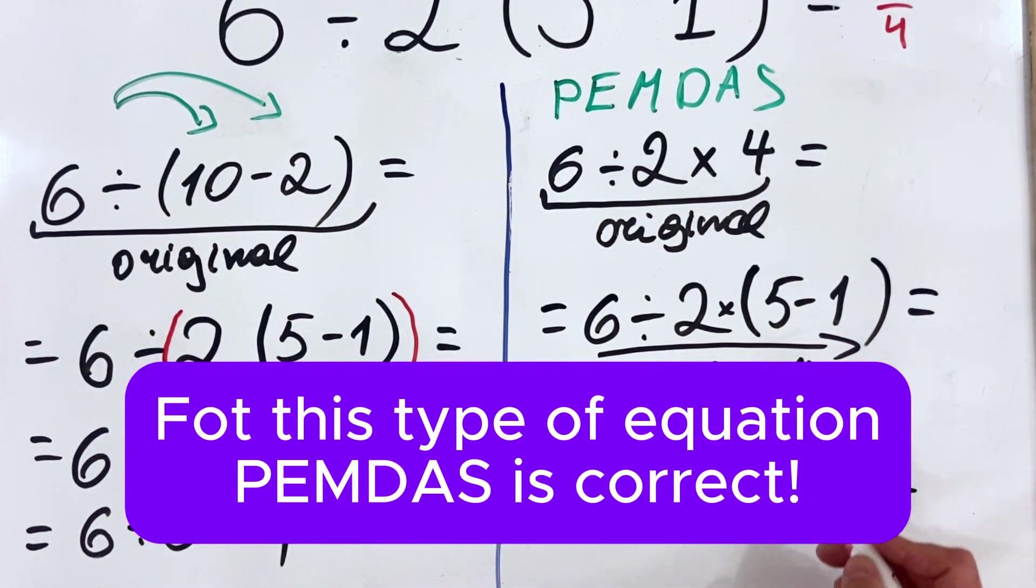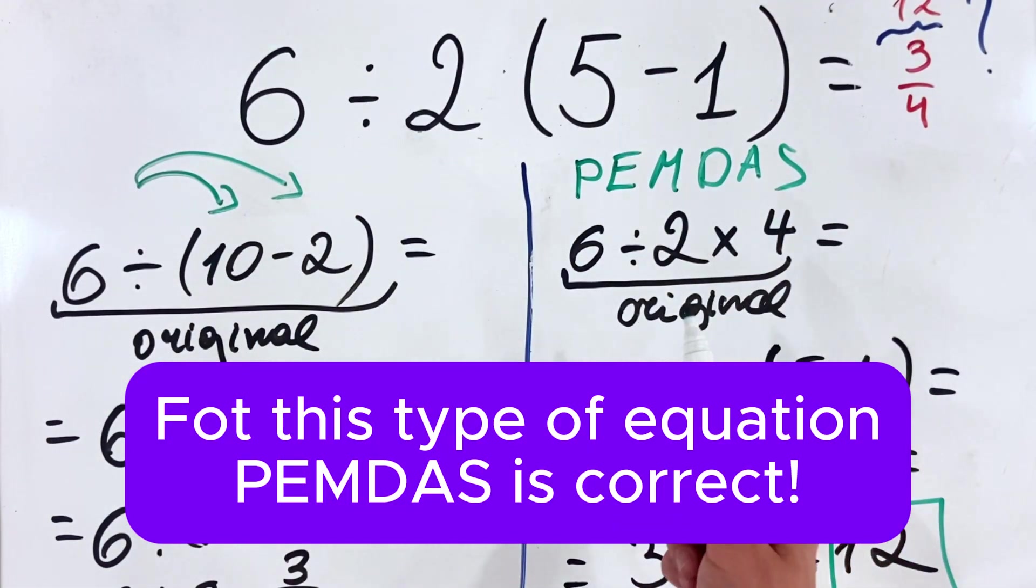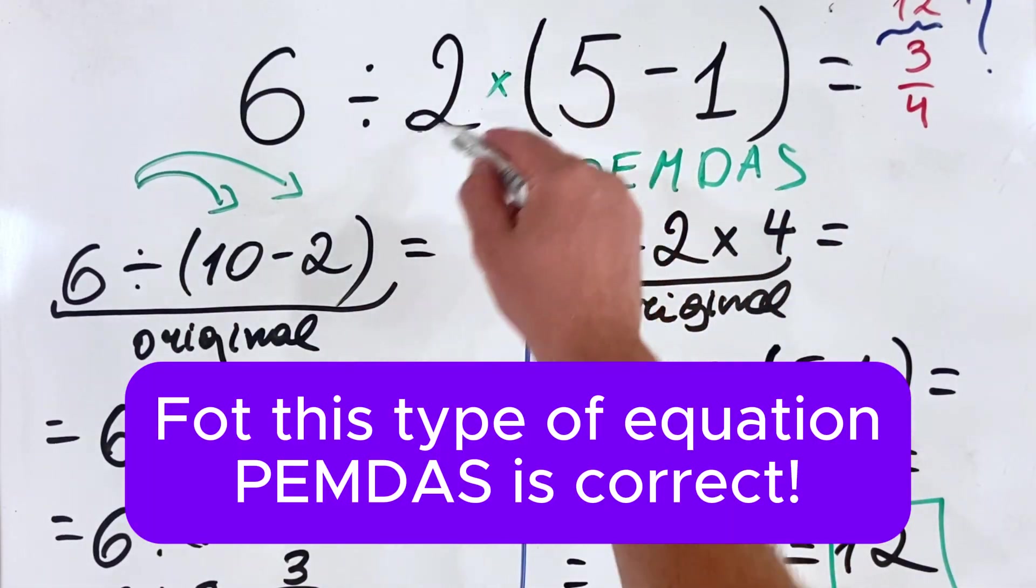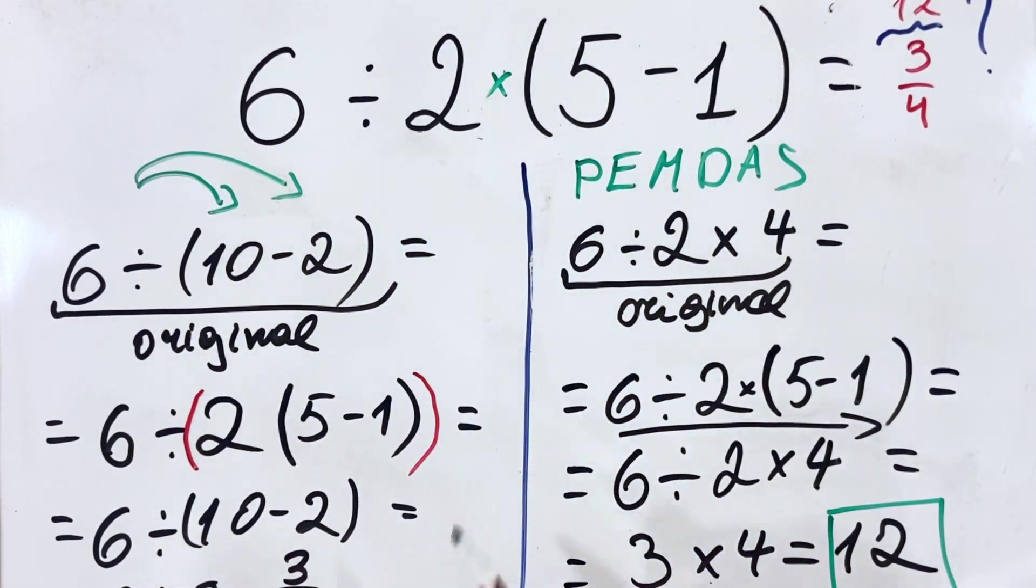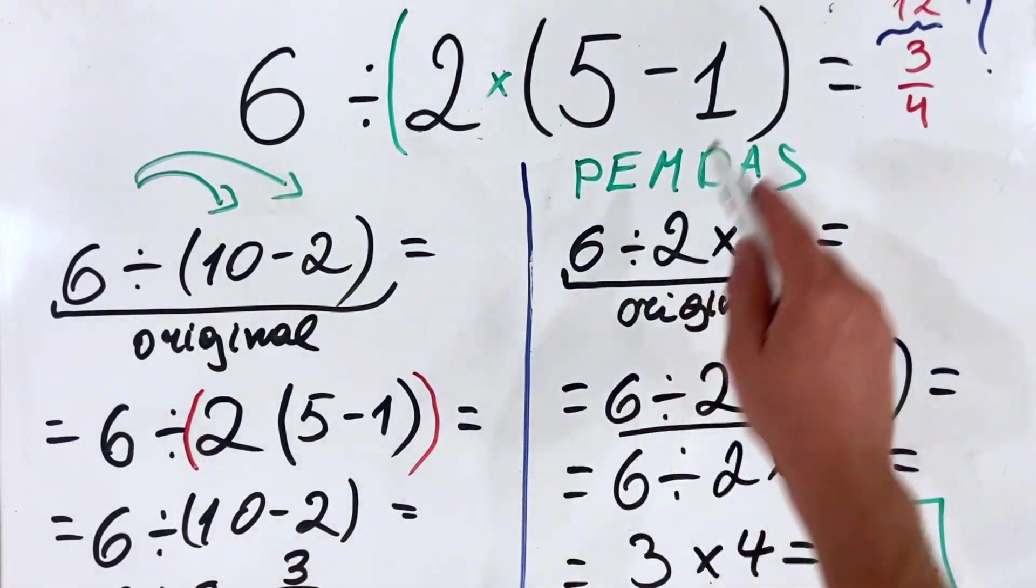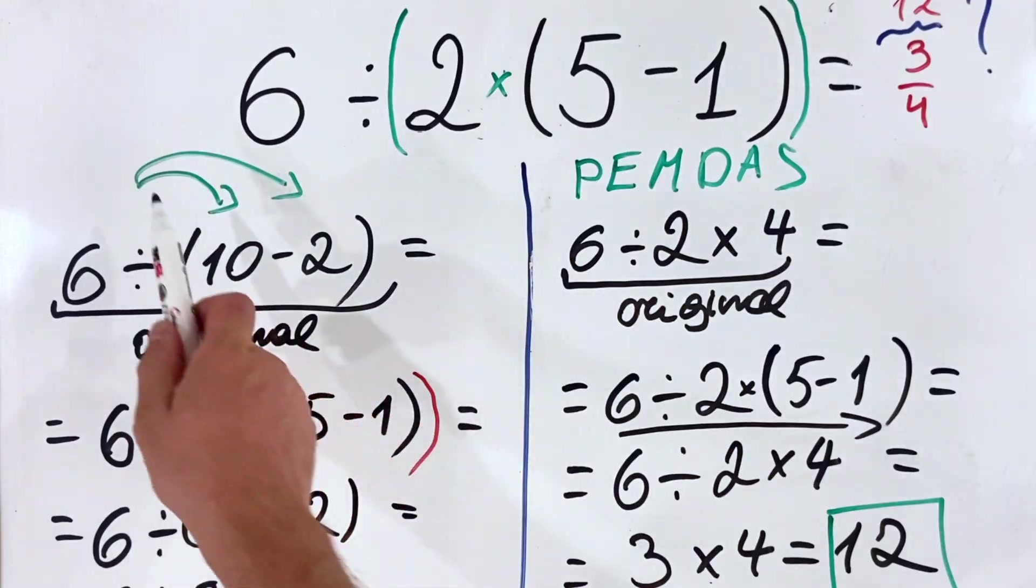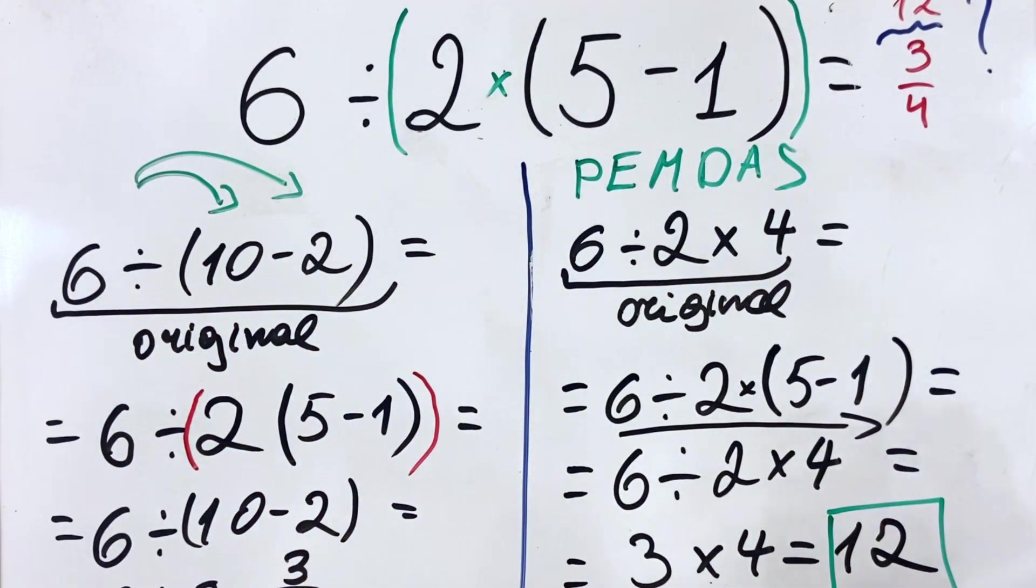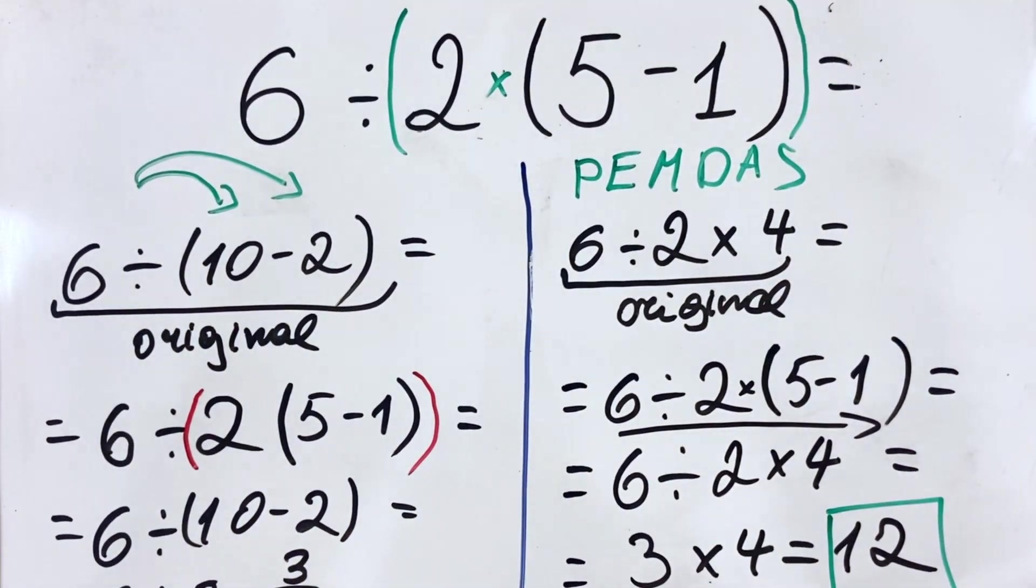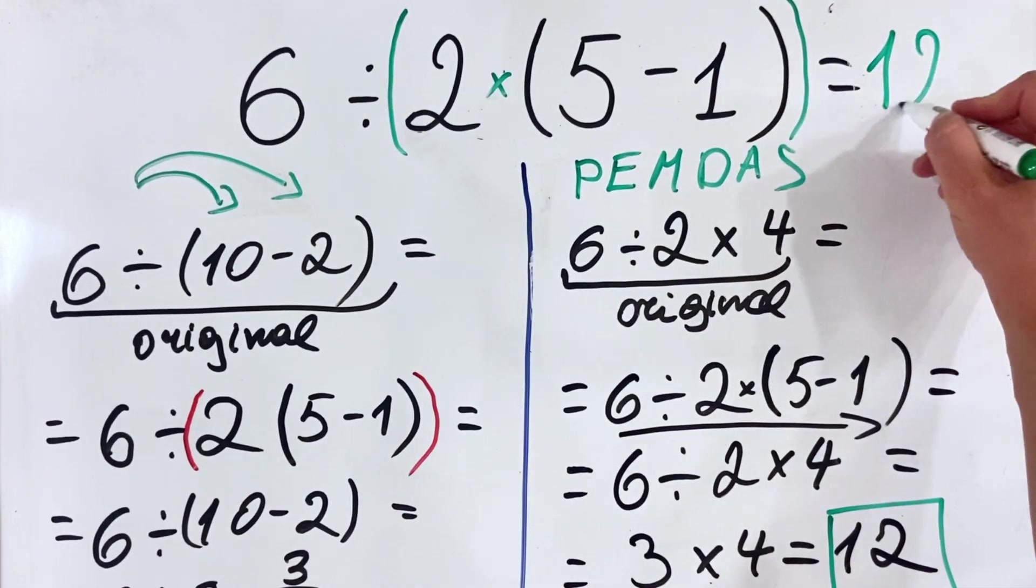So in this way, guys, we have proved that when we have equation like this, the principle that should be applied is PEMDAS, because here it's multiplication. If we would have had a double parenthesis, then this would have been the correct approach for implicit multiplication. Therefore, the correct answer is 12.